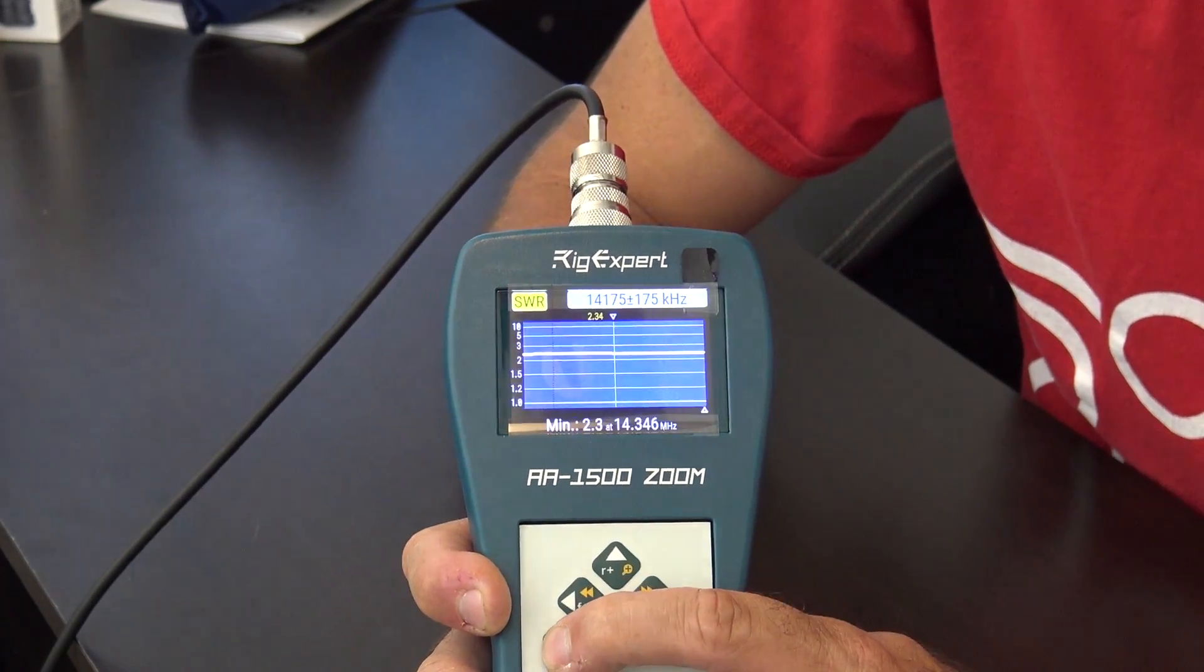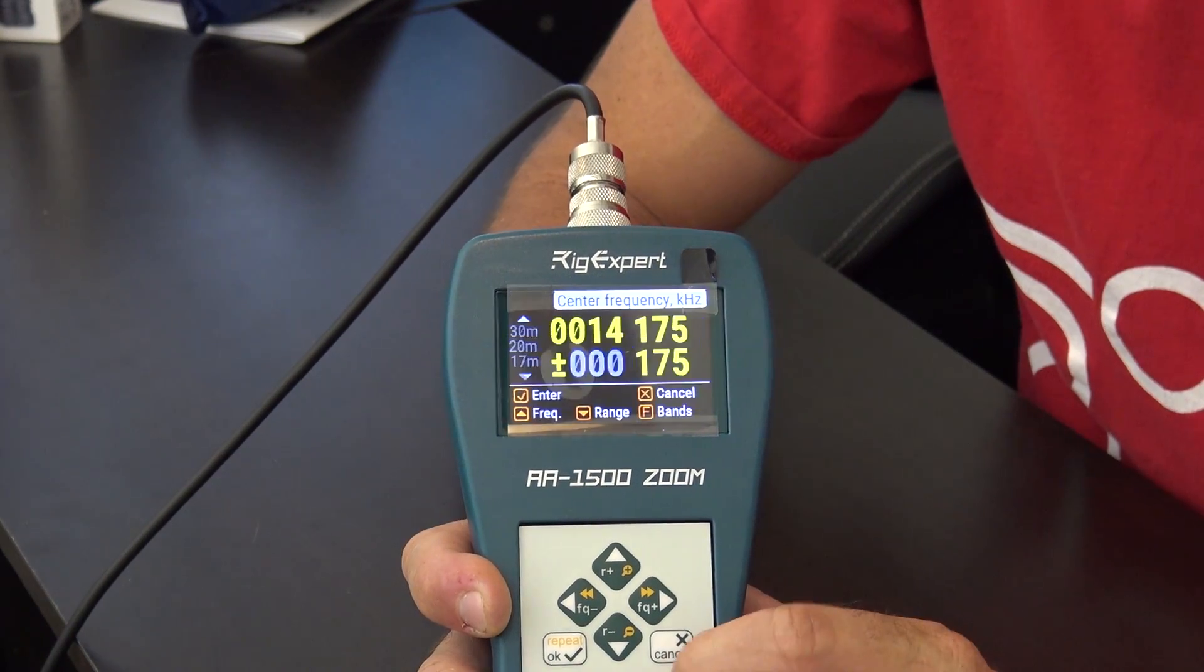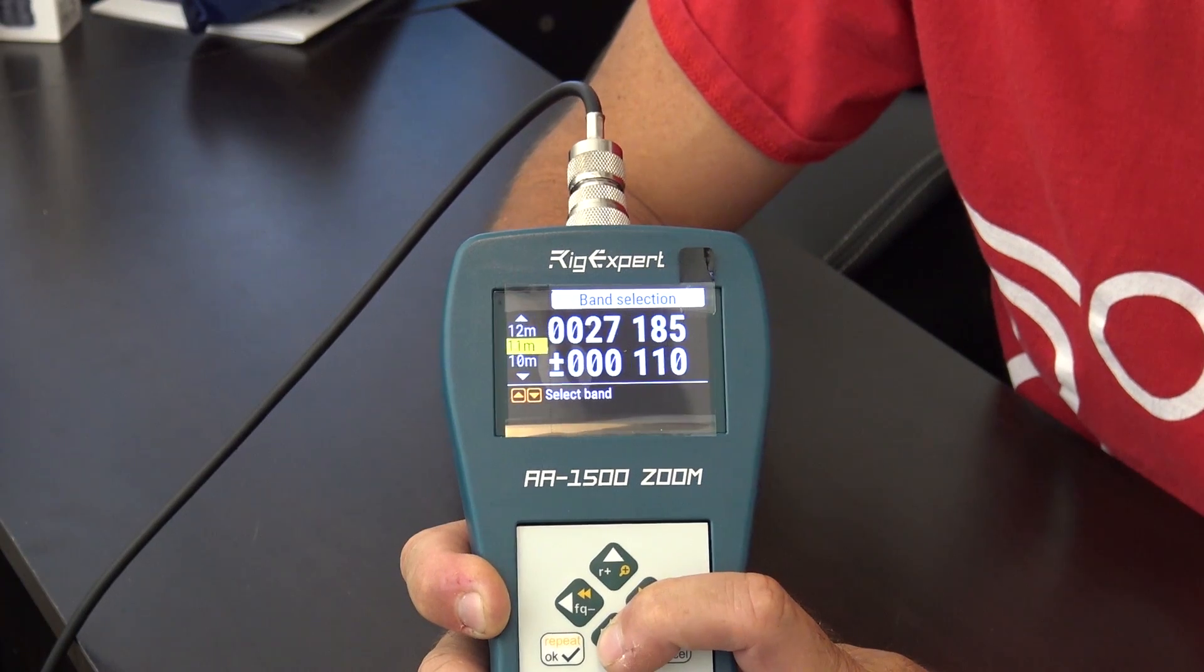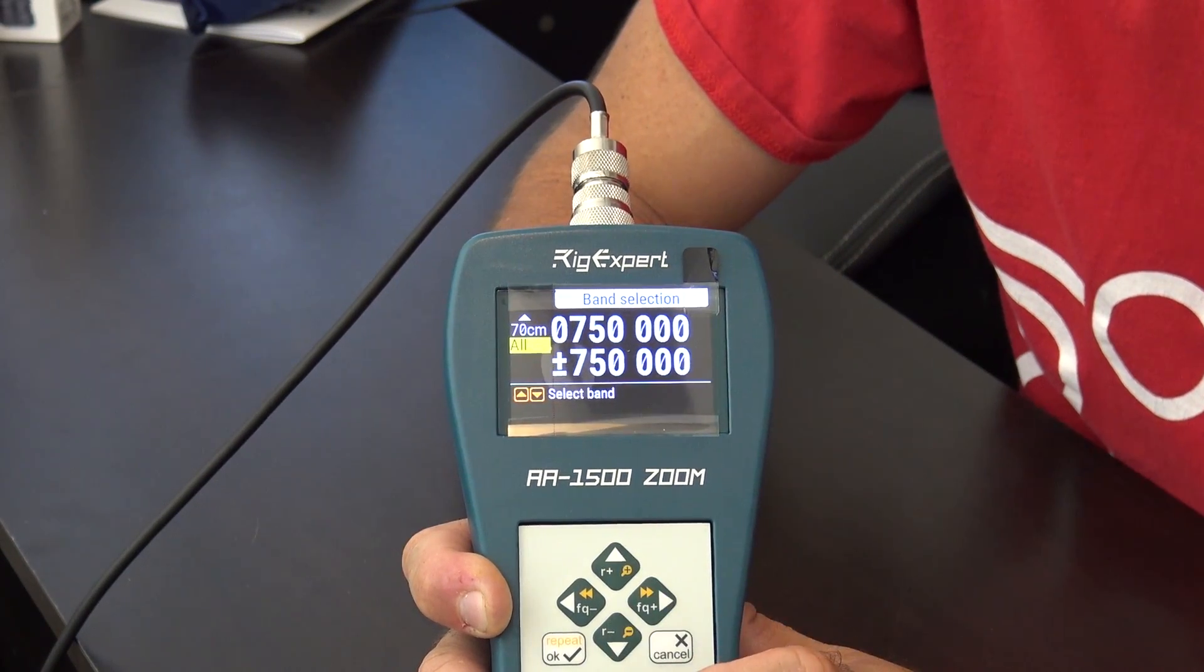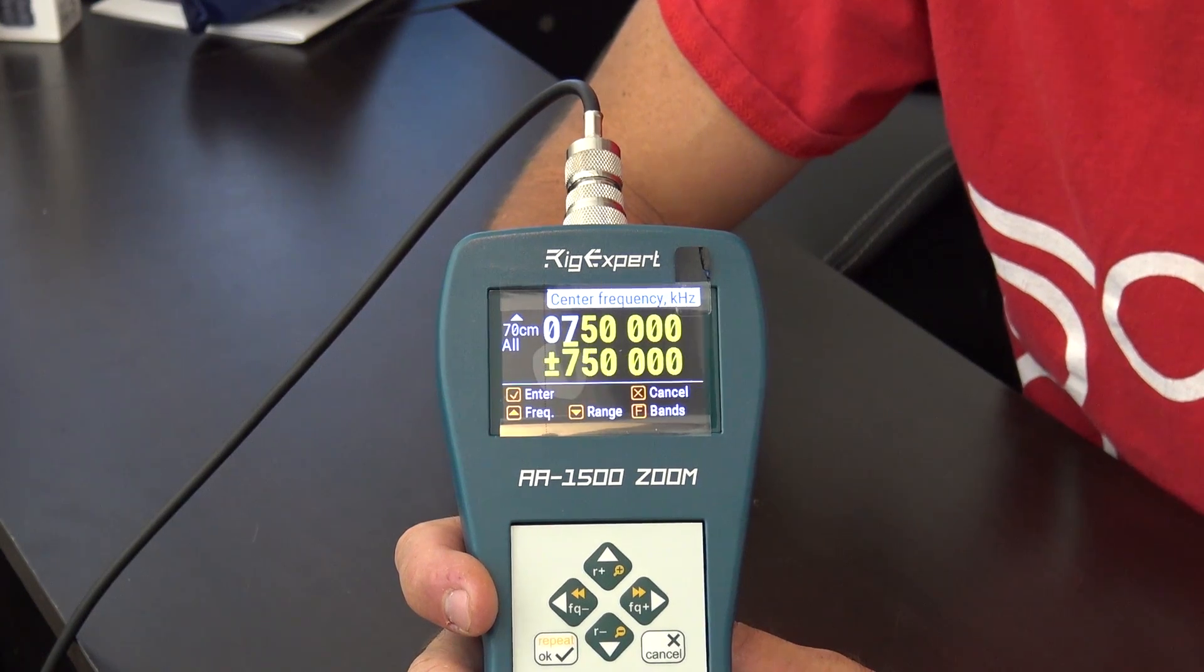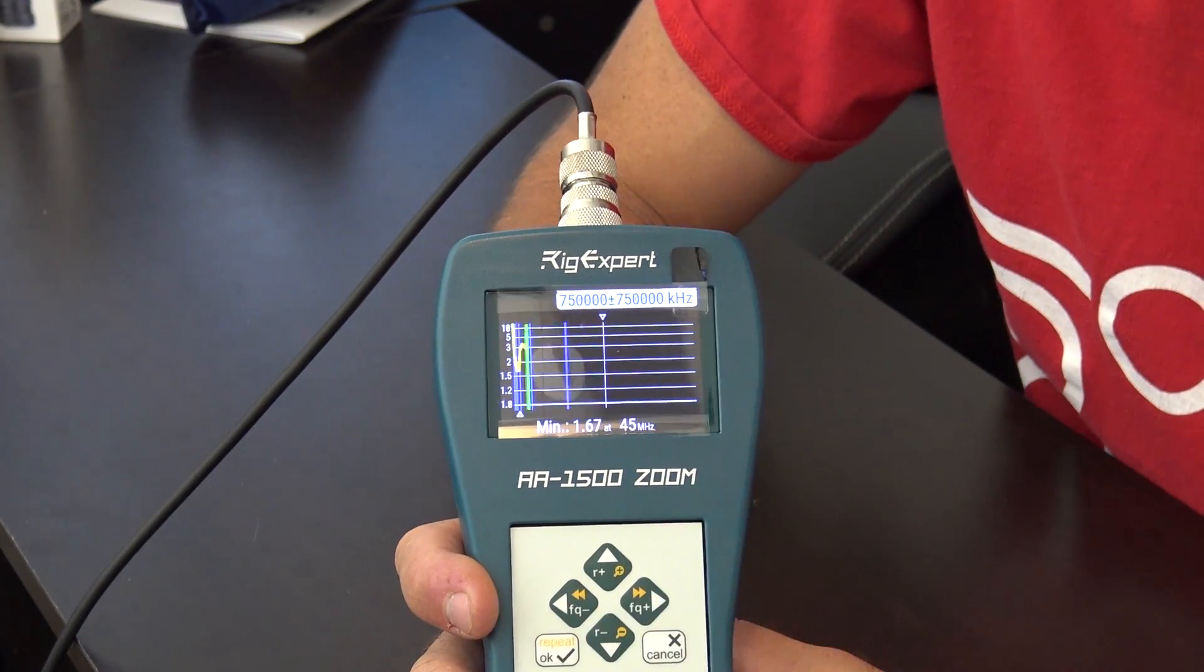SWR chart. Now, on this, I can get a frequency range and I can go like this, you ready? All bands. And it's going to sweep everything that this analyzer can handle, ready? Look.